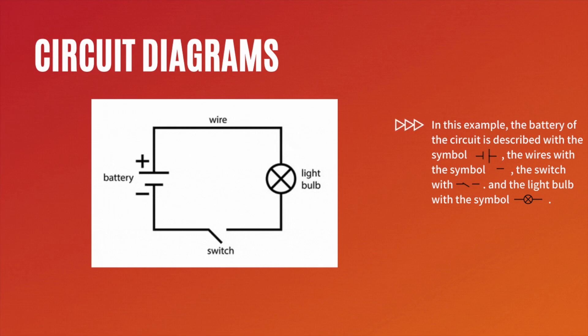In this example, the battery of the circuit is described with the symbol of two parallel lines with a side for the anode and a side for the cathode. The wires utilize a symbol that is a solid line.